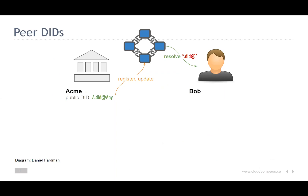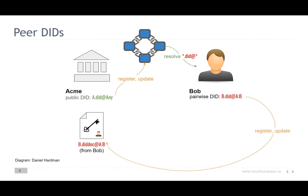With peer DIDs, we start the same way — Acme has a public DID on a public ledger, on a blockchain, and Bob is able to resolve that and use it to start the relationship. The first thing Bob does is create a pairwise DID, as before — this is Bob's DID for the Acme-Bob relationship. Instead of putting this on the public blockchain, Bob simply packages up the DID doc and the DID and sends it over to Acme for them to put in their wallet. When necessary, Acme can resolve that DID by looking in their wallet instead of looking on the blockchain.